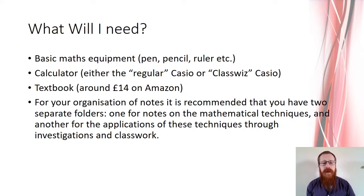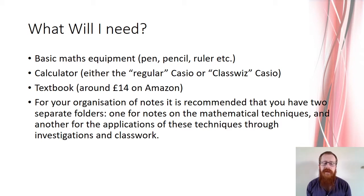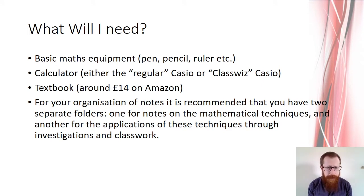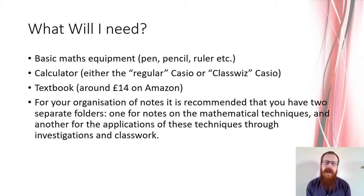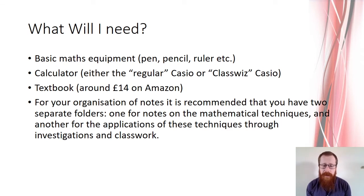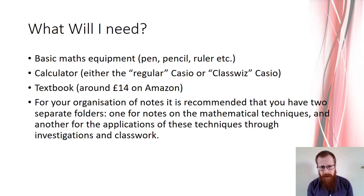For equipment you'll need your basic stationery. For calculators, the one you had from GCSE will suffice — you don't need anything extra. I'd recommend Casio calculators as they're more user-friendly. The A-level Casio is around £25 but does a lot and can save you a lot of time. For textbooks, there is one available on Amazon — the 'Maths in Context' book for Level 3 — which was around £14. We also have textbooks in school for you to use.